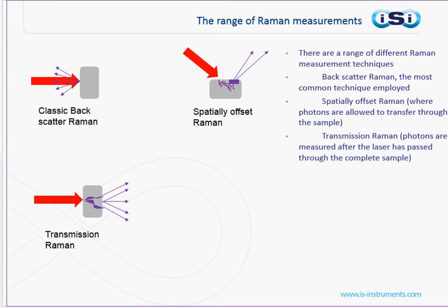Another common method is transmission Raman. In transmission Raman, the laser light is fired from one side and the Raman photons are measured from the opposite side of the sample, after the photons have travelled through the sample. This gives you a complete bulk measurement of the sample, making it ideal for quality assurance applications. However, this technique requires quite high-sensitivity spectrometers to measure.